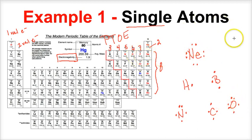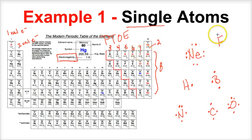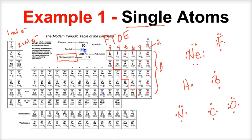Last, let's do fluorine. Fluorine has seven valence electrons, so place one on each side and pair them up: one, two, three, four, five, six, and seven. Those are the Lewis structures for single atoms. Now let's apply Lewis dot diagrams to molecules.